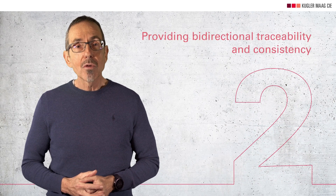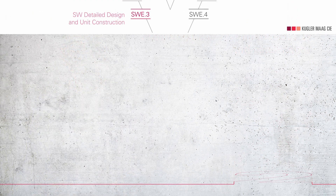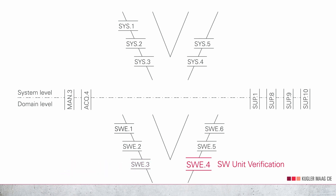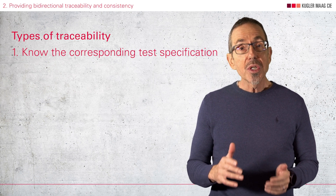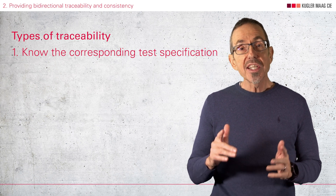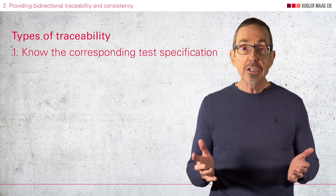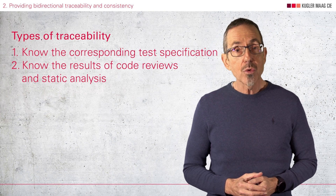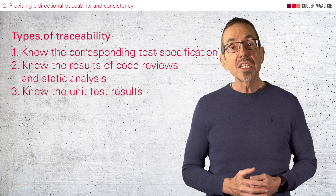Point number 2 is providing bidirectional traceability and consistency to the detailed design. Software detailed design is a process on the left-hand side of the V-model, and it has a counterpart on the right, which is software unit verification. Three types of traceability are required. First, for each unit in a detailed design, you know which is the corresponding test spec — and bidirectional traceability means that this works in both directions. Second, for each unit, you know what were the results of code reviews and static analysis. Thirdly, for each unit test spec, you know what were the unit test results.